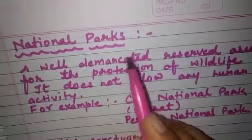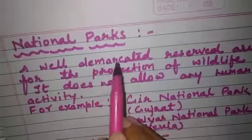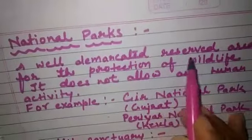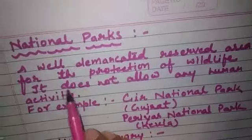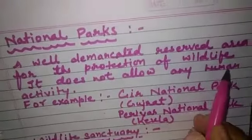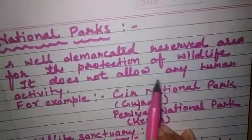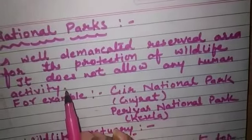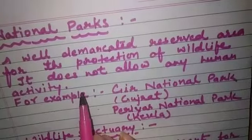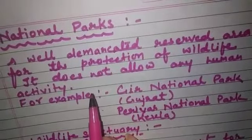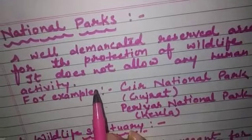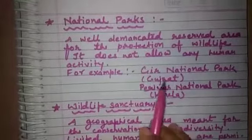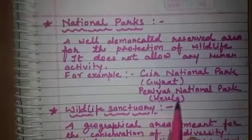National parks are well-demarcated reserved areas for the protection of wildlife. They do not allow any human activity — the collection of firewood and timber from any part of the forest is totally prohibited in national parks. For example, Gir National Park and Periyar National Park.